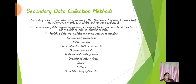Secondary data includes magazines, newspapers, books, journals, etc. It may be either published data or unpublished data. Published data may contain government publications, public records, historical and statistical documents, business documents, and technical and trade journals. Unpublished data may be diaries, letters, or unpublished biographies of an individual.